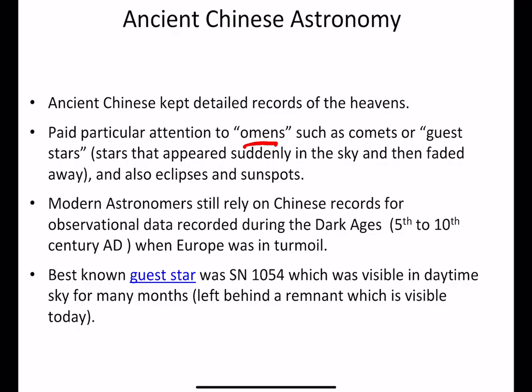The Chinese also paid attention to eclipses and sunspots — spots on the surface of the sun. They took meticulous records of everything they saw. Modern astronomers rely on these Chinese records for observational data recorded during the Dark Ages — the 5th to 10th century AD in Europe — a period of warfare when very little astronomy was done in Europe.